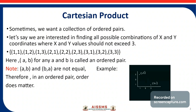Sometimes we want a collection of ordered pairs. For example, we are interested in finding all possible combinations of x and y coordinates where x and y values should not exceed 3. Here we have to find out all the possible combinations of x and y coordinates. These are all the ordered pairs — the first value is for the x coordinate and the second value is for the y coordinate.